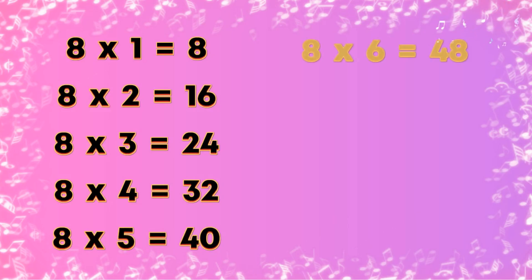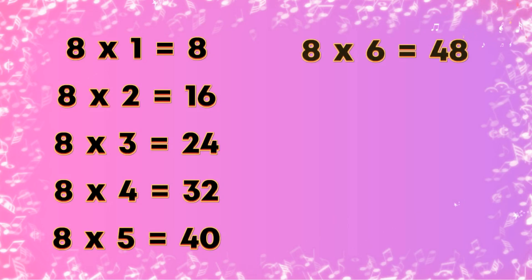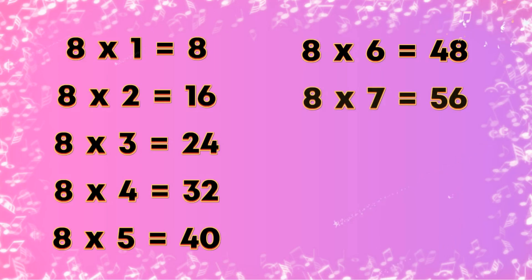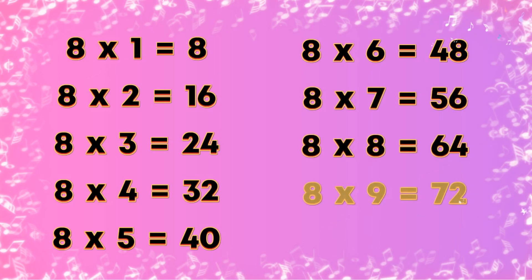Table of 8: 8×1=8, 8×2=16, 8×3=24, 8×4=32, 8×5=40, 8×6=48, 8×7=56, 8×8=64, 8×9=72, 8×10=80.